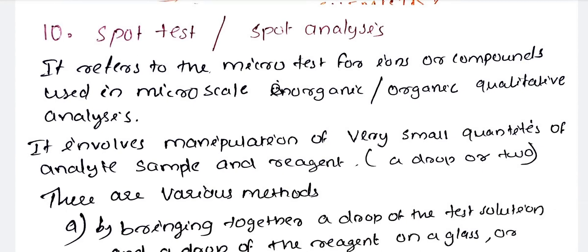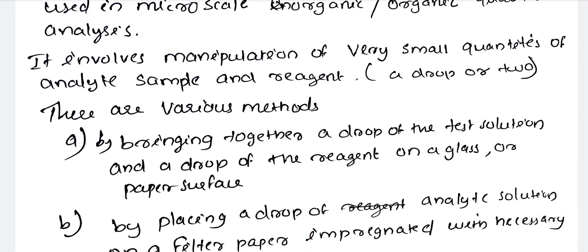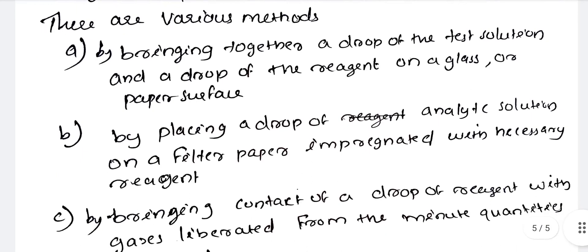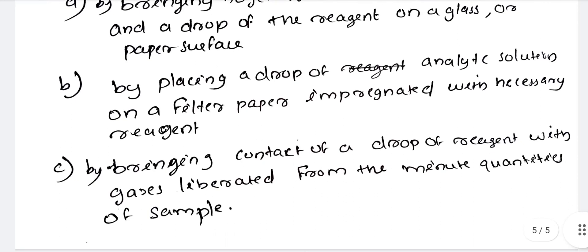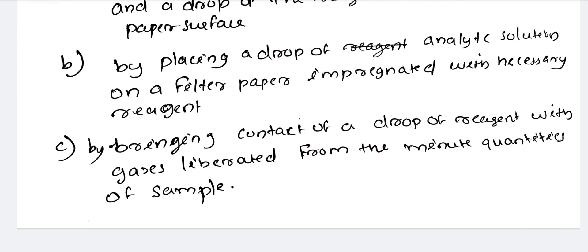Spot test refers to the micro test for ions or compounds using micro scale organic or inorganic qualitative analysis. It involves manipulation of very small quantities of sample and reagents. There are various methods. The first method is by bringing together a drop of test solution and a drop of reagent on a glass or paper surface. The second method is by placing a drop of analyte solution on a filter paper impregnated with the necessary reagent. The third method is by bringing the drop of reagent in contact with gases liberated from minute quantities of sample.